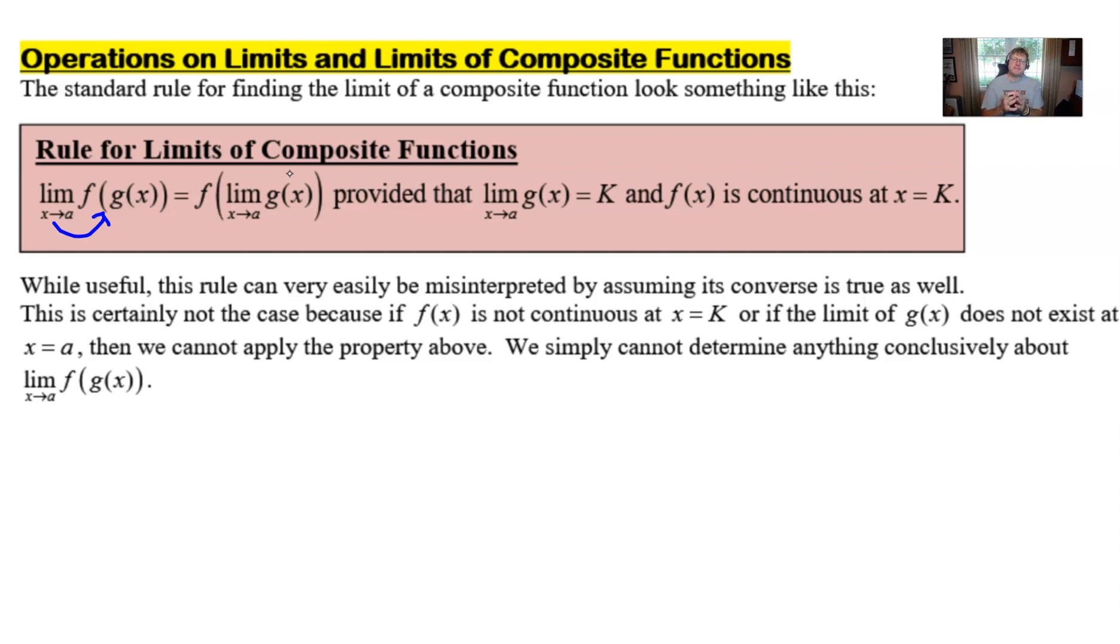But as all things in mathematics there's probably going to be a catch and that catch is first of all you have to make sure that that inner limit has an answer. In other words it cannot result in a does not exist. And the second thing, this is the part that's even trickier, is that the outer function has to be continuous at that value for k. And so we have to pay very close attention to those two things. And if those two things don't seem to work well we've got a bit of a problem on our hands.